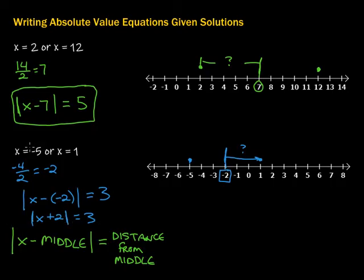So plug in my x values. Negative 5. Negative 5 plus 2 would be negative 3. The absolute value would be 3. So far, so good. And 1. 1 plus 2 is 3. The absolute value is also 3. And we're good on that one as well. So here is my equation which has those two for solutions.